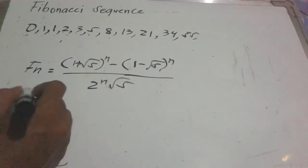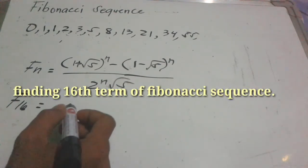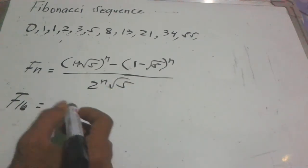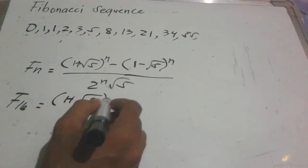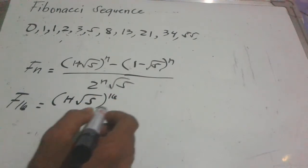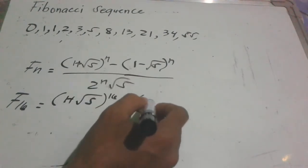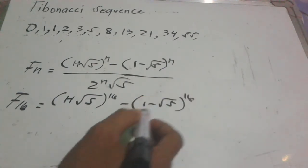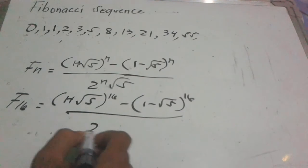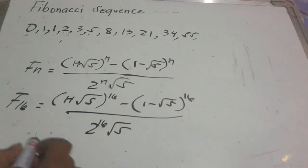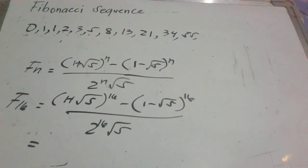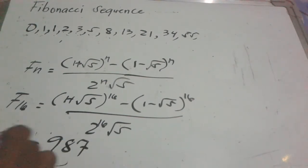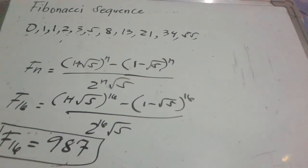For example, let's find the 16th term of the Fibonacci sequence. Substituting into the formula: (1 plus square root of 5) raised to 16, minus (1 minus square root of 5) raised to 16, over 2 raised to 16 times square root of 5. When computed on a calculator, the answer is 987. So the 16th Fibonacci number is 987.